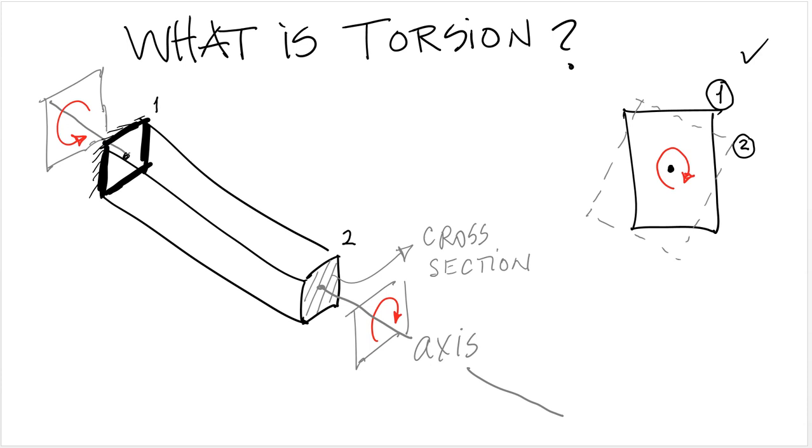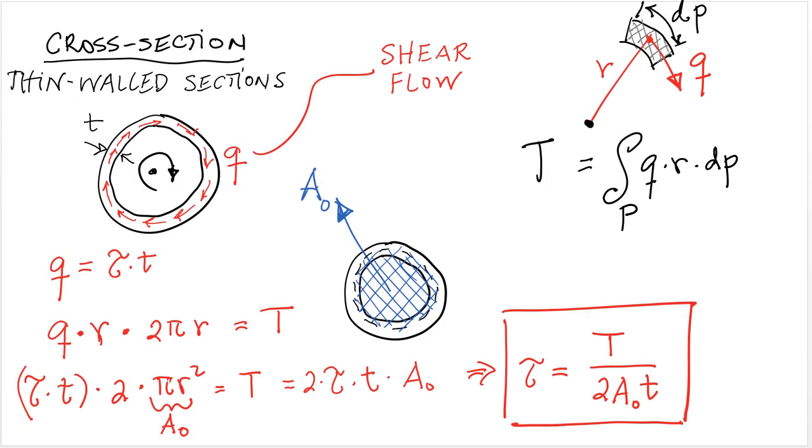Let's review some aspects related to mechanics of materials. Probably the simplest type of section to analyze for torsion are thin walled sections. So these are sections in which you basically have material around the perimeter with a relatively small thickness with respect to the size of the cross section. We call that thickness T.